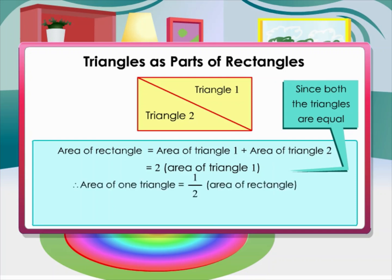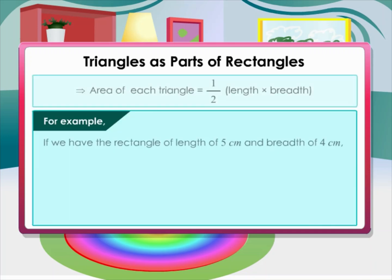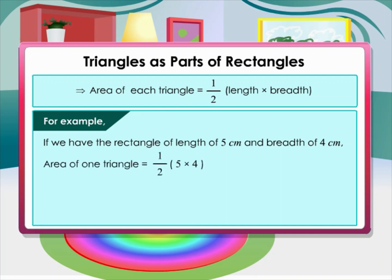Therefore, the area of one triangle equals half the area of the rectangle, which means the area of each triangle equals half times length times breadth. For example, for a rectangle of length 5 cm and breadth 4 cm, the area of one triangle equals half times 5 times 4, giving 10 cm².